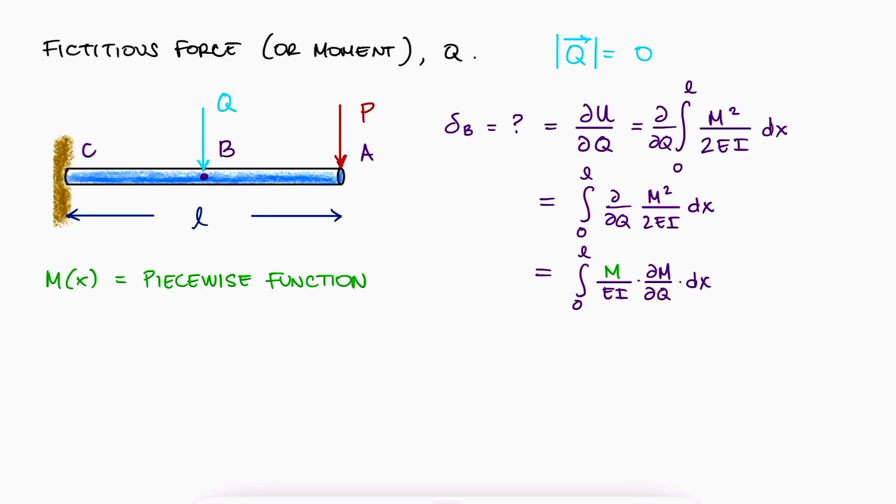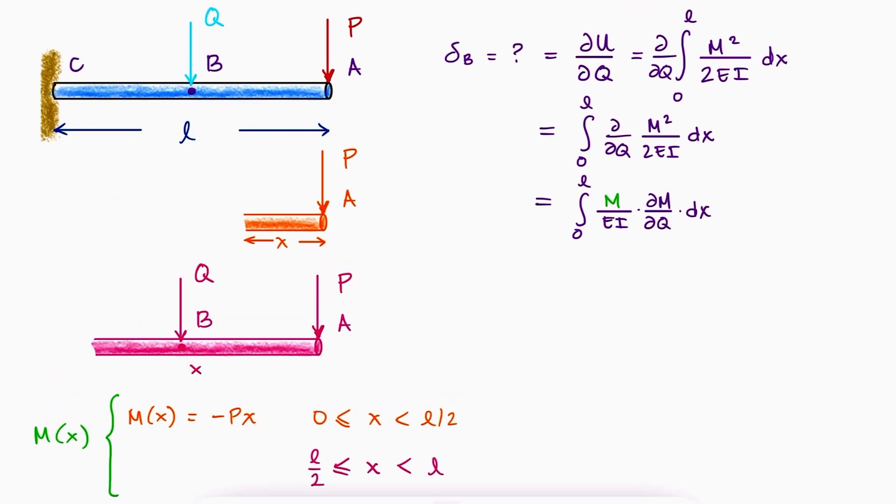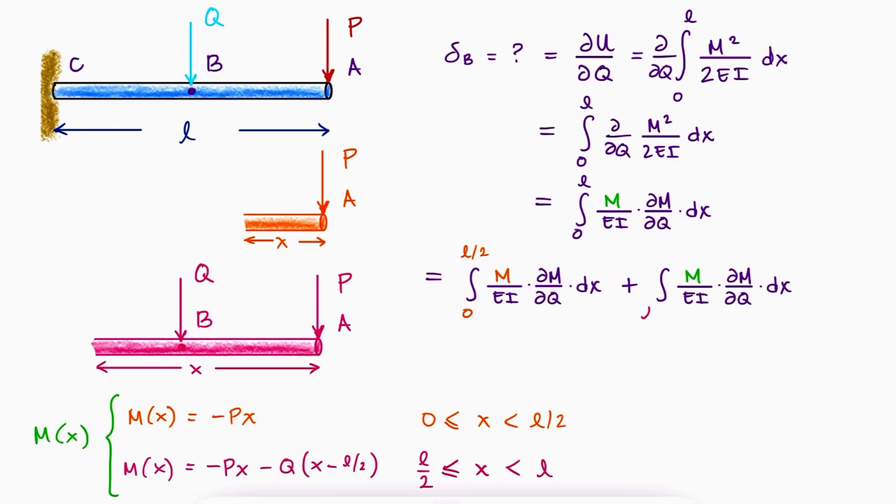Starting at the load p, if x is between 0 and half of the length of the beam, l over 2, a simple free body diagram of the cut would show us that the moment at x would be equal to minus p times x. On the other hand, if x is between l over 2 and l, the free body diagram of that cut would show us that both q and p affect the moment function m of x. This means that the integral needs to be split into two, one from 0 to l over 2 and one from l over 2 to l.